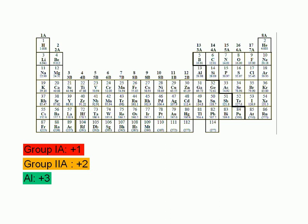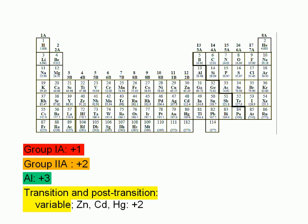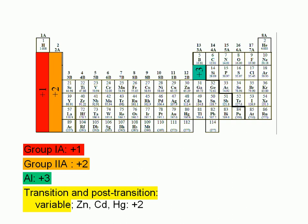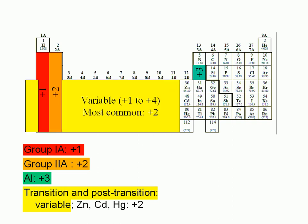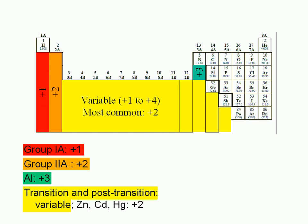Although transition metals and post-transition metals tend to form ions with different charges, the most common is plus two. To repeat, plus one for the alkaline metals, plus two for the alkaline earth metals, plus three for aluminum, and more than one possible charge, usually ranging from plus one to plus four, for the transition and post-transition elements. The most commonly found charge is plus two.